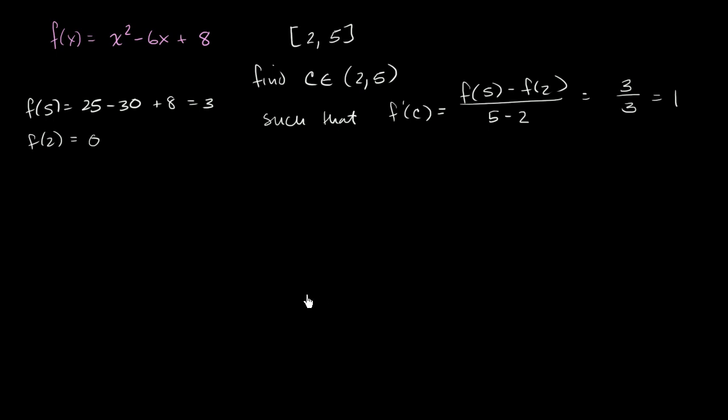f prime of c is equal to, needs to be equal to 1. And so what is the derivative of this? Well, let's see, f prime of x is equal to 2x minus 6. And so we need to figure out at what x value, especially it has to be within this open interval, at what x value is it equal to 1? So this needs to be equal to 1. Let's add 6 to both sides. You get 2x is equal to 7.